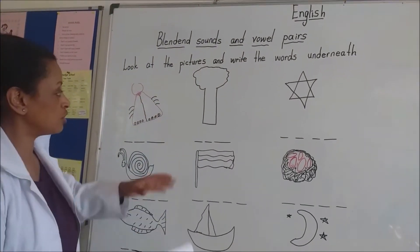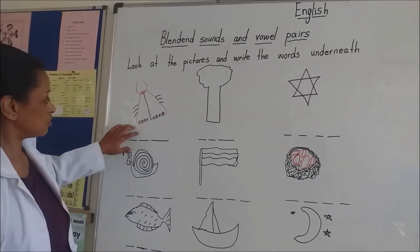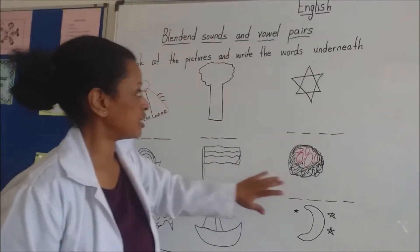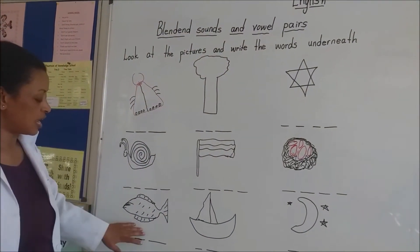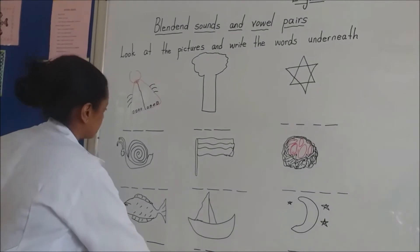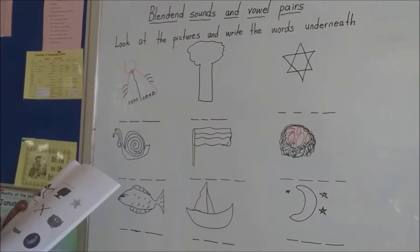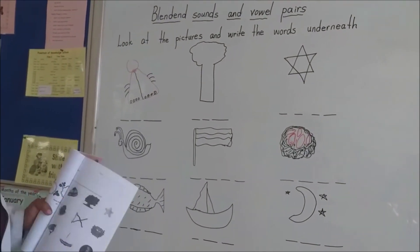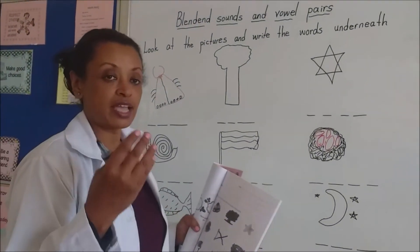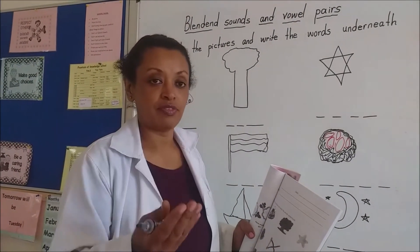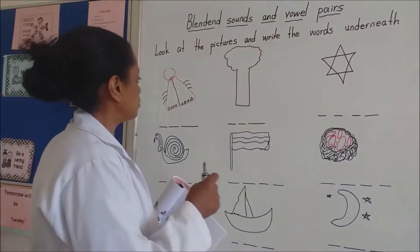It's a picture. You're going to do this. You're going to write their names underneath. The words underneath. Excellent. Blended sounds means when you've got two sounds together, sing one word. Let me show you here.